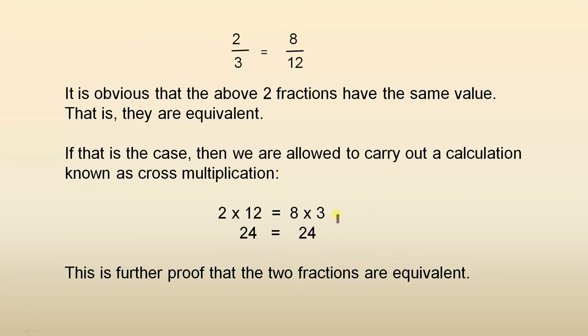And here's the technique. 2 times 12, which is 2 times 12, equals 8 times 3. And the reason it's called cross multiplication is because of this cross here. So 24 equals 24, because 2 times 12 is 24, 8 times 3 is 24. This is further proof that the two fractions are equivalent.